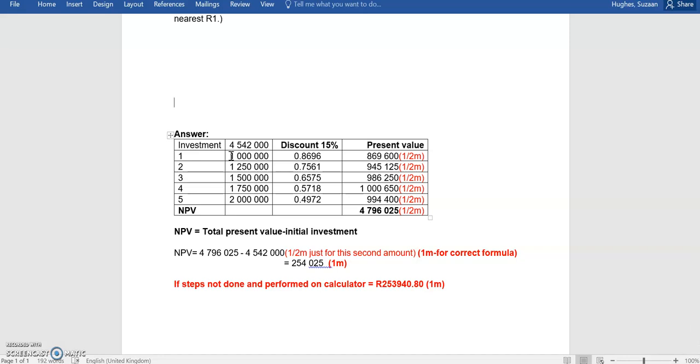In the first year of the investment, there will be a million rand cash inflow. In the second year, that will increase by 250,000. In the third year, by another 250,000.